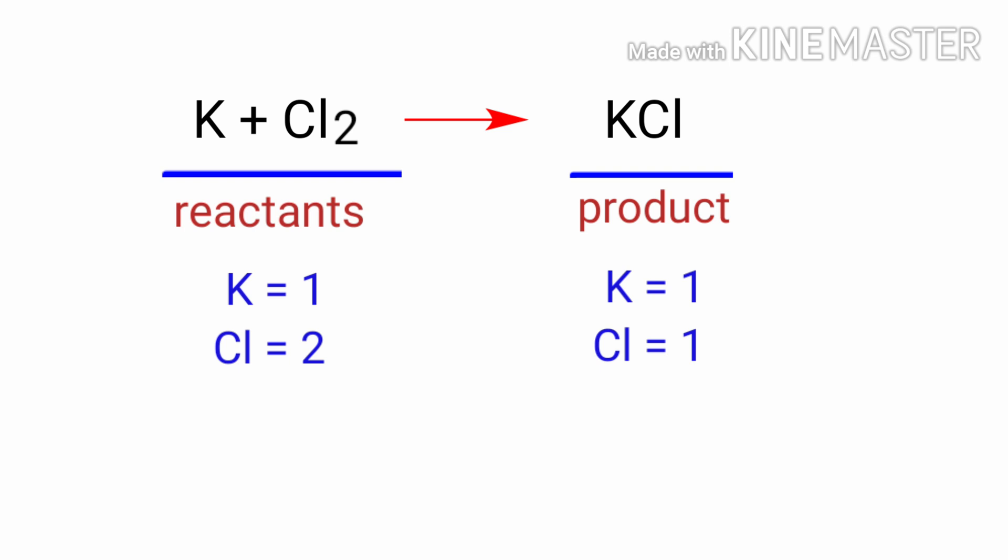In this equation, we need to balance the Chlorine atoms. To do this, we need to put a coefficient of two in front of KCl.